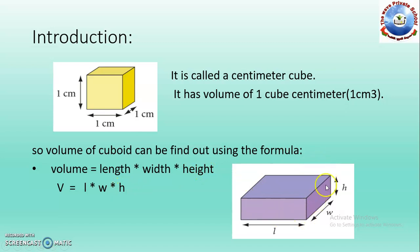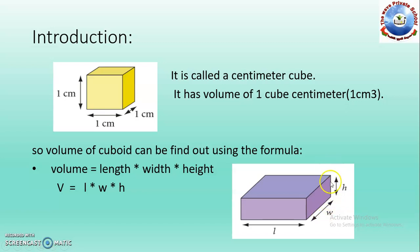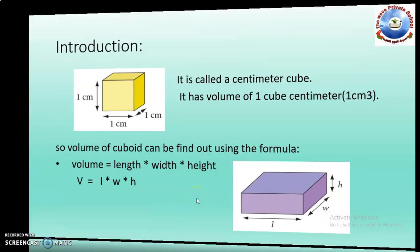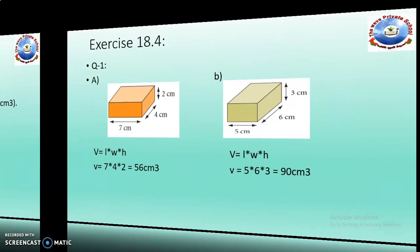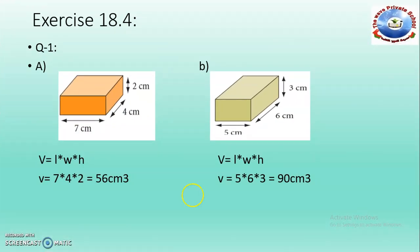For example, if you have this type of cuboid, then this side is given as length, this side is known as width, and the upper side is called height. So now let's try to solve our exercise.